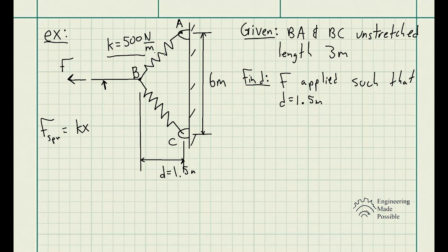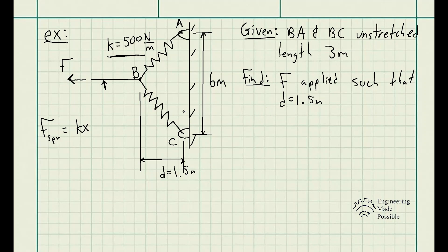For the problem statement, we have springs. Springs BA and BC each have a stiffness or spring constant K of 500 N per meter, and each spring has an unstretched length of 3 meters. So the springs at rest are 3 meters in length. Now we're supposed to determine the horizontal force F applied such that the displacement D is equal to 1.5 meters.